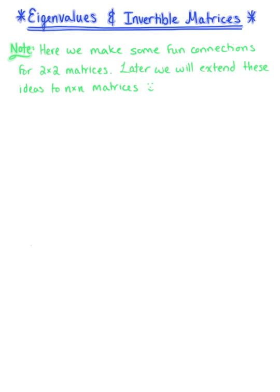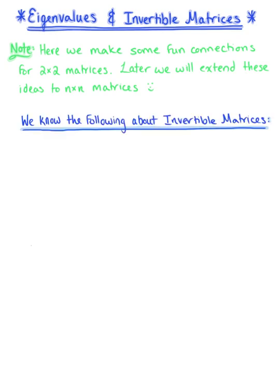To begin, let's recall what we know about 2 by 2 matrices. Suppose we have a 2 by 2 matrix A with components A, B, C, D. We know that the determinant of such a matrix A is defined as A times D minus B times C. With this information, there are two cases that we need to consider.